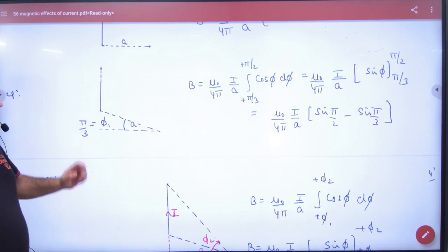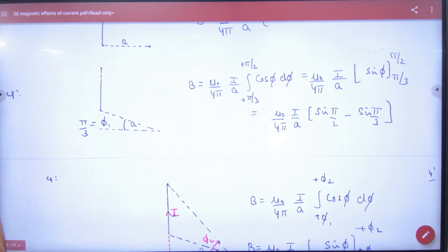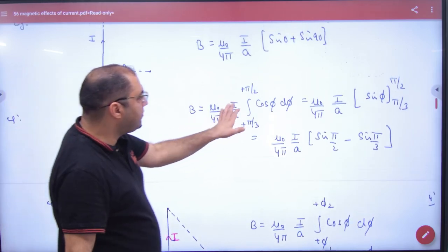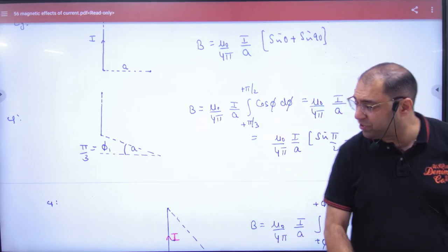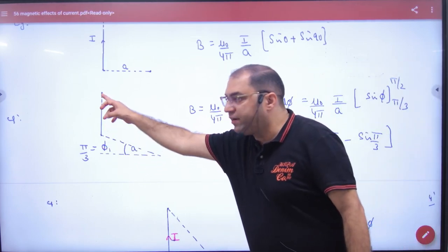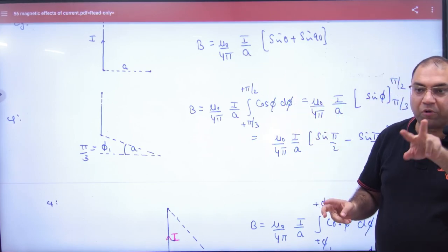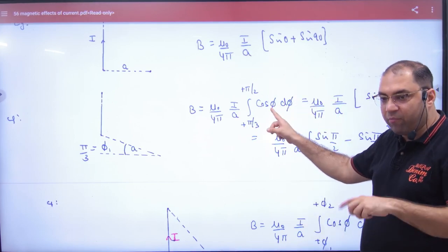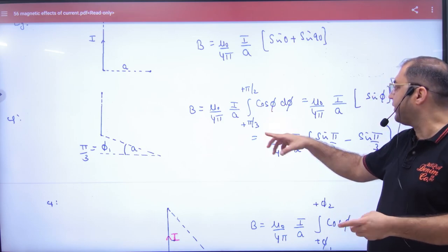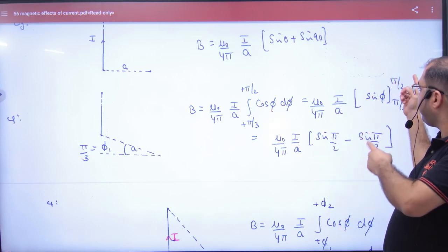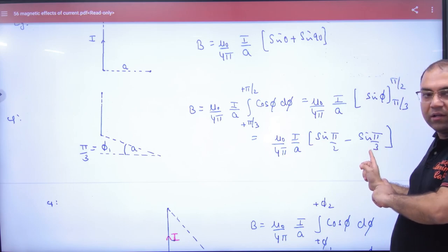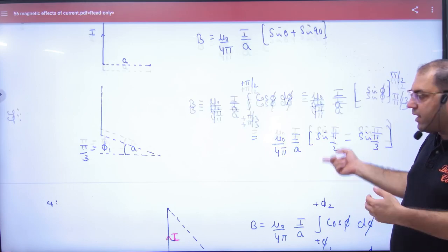Now the formula won't work. Why won't it work? Because the standard formula put the limits as minus phi1 to phi2. Both limits should be put as plus phi by 3 plus phi by 2. Both positive. So when this formula is derived, it was sin one time pi by 2 and one time pi by 3 for the answer.